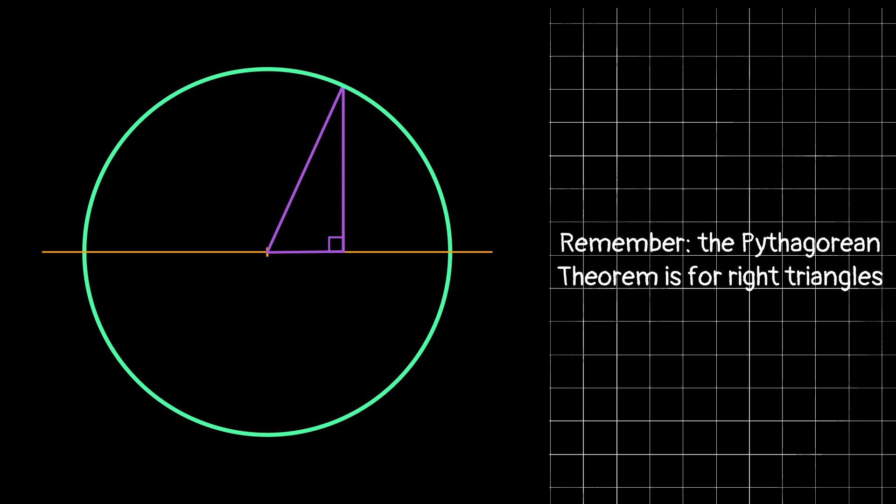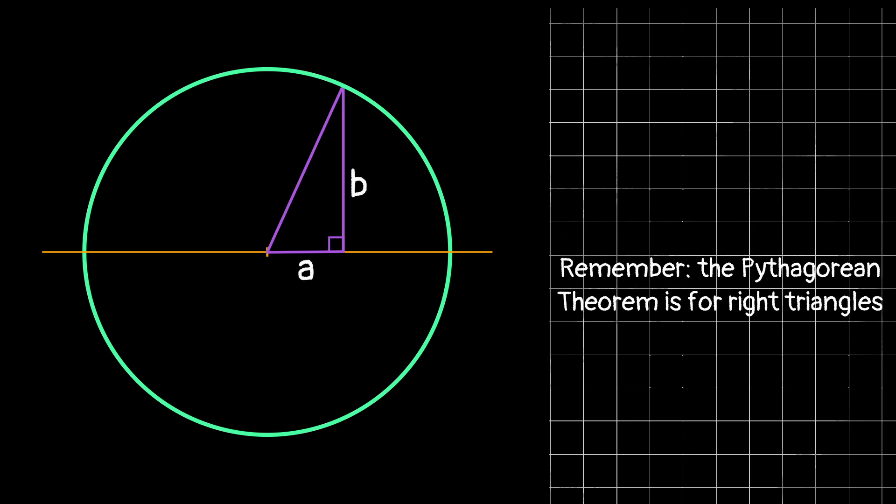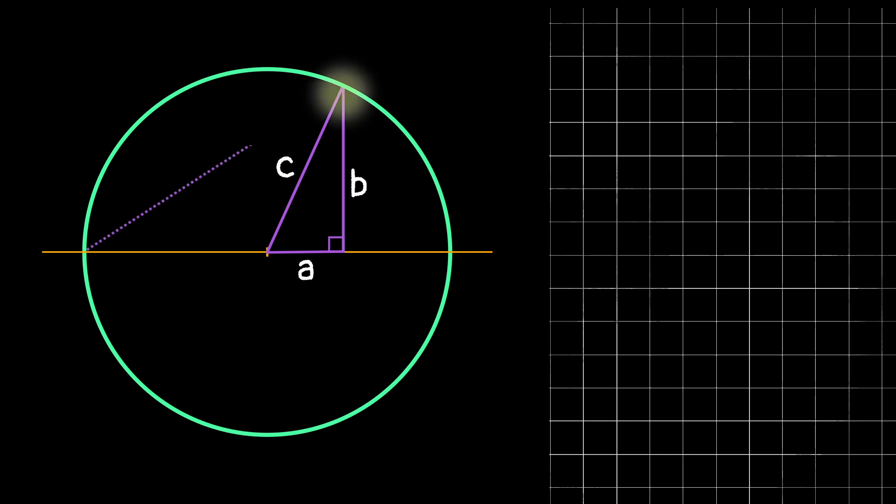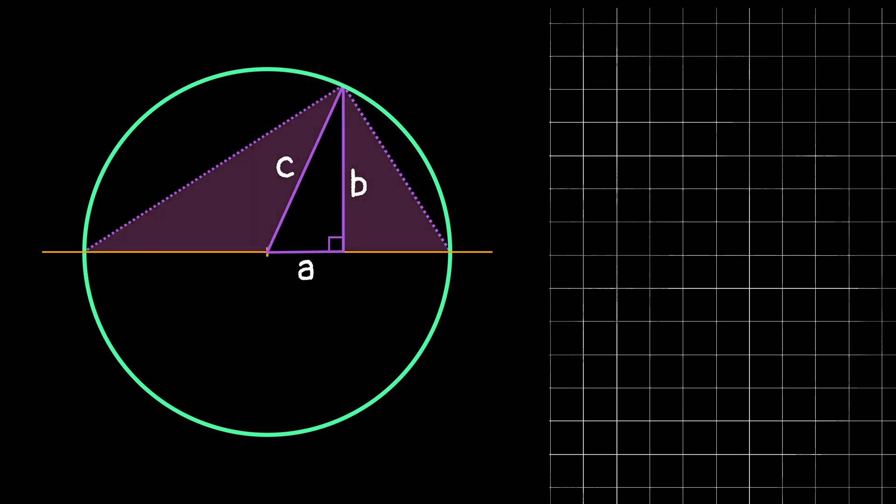We can label the legs of the triangle A and B and call the hypotenuse C. Starting from the top vertex of our triangle and extending to each endpoint of the diameter, we can form two more triangles.